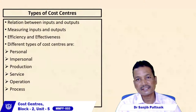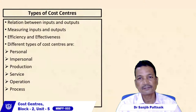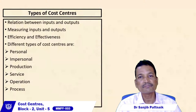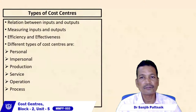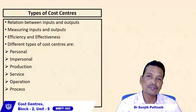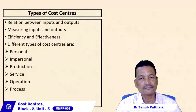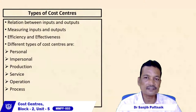Production cost centers involve converting inputs into outputs. In this conversion system, materials, labor, and machinery are used to transform given inputs into desired outputs. When the outputs are products, we call it a production cost center.